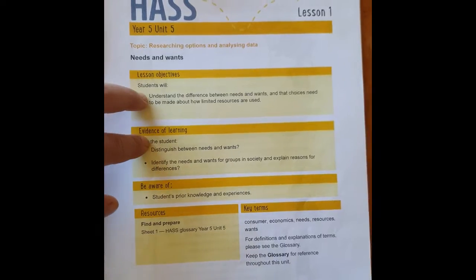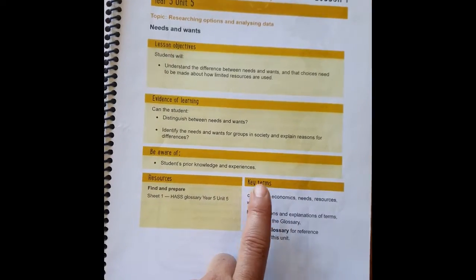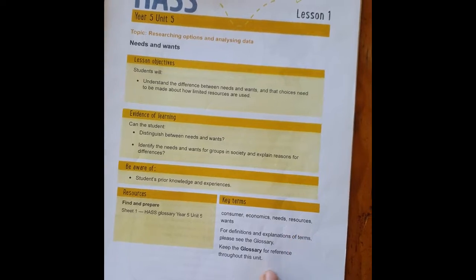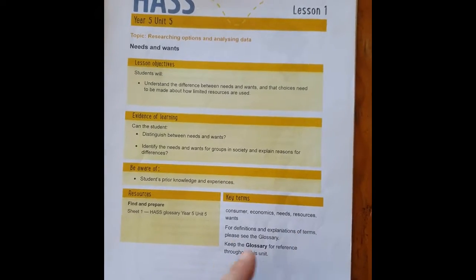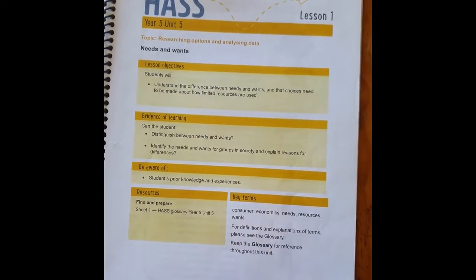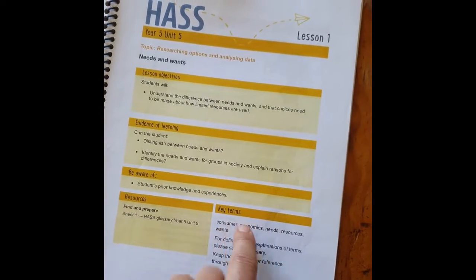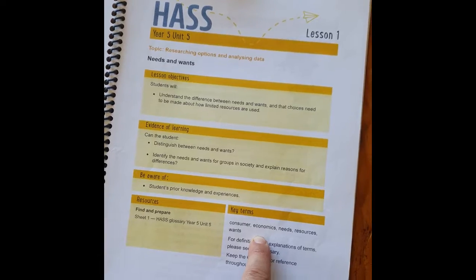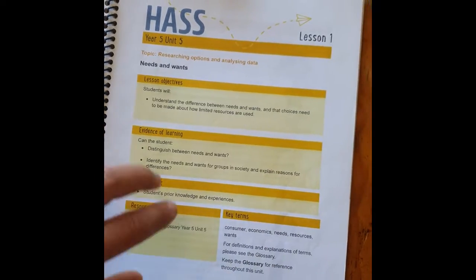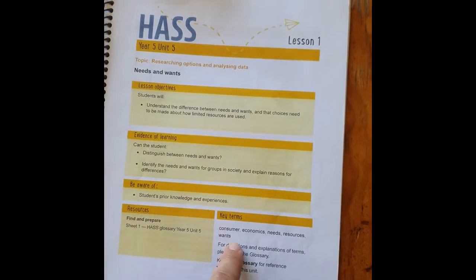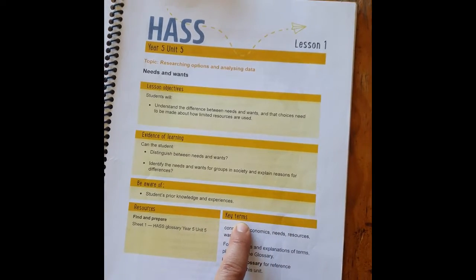If you're looking for some more information, the key terms will give you direction. For example, we're going to be looking at consumer economics and needs, resources, and wants — that's the direction this lesson is taking. So if you take the lesson objectives, the evidence of learning, and the key terms, you know what's going to happen.